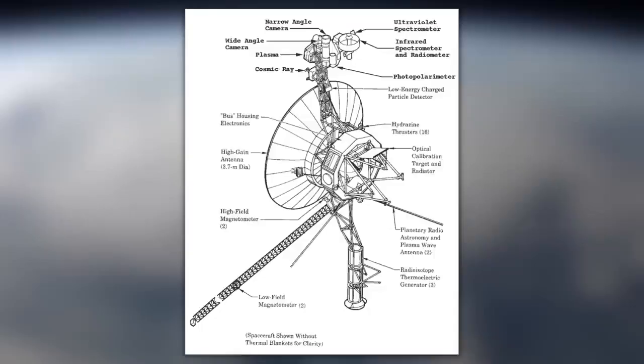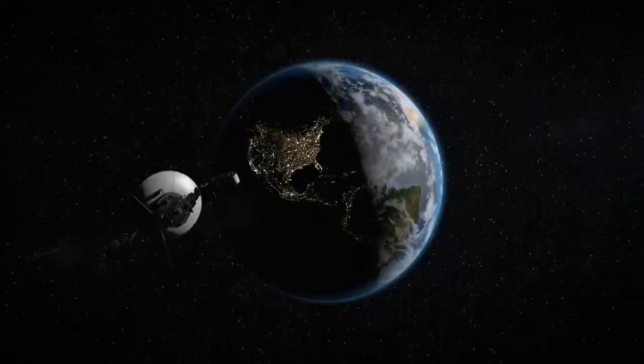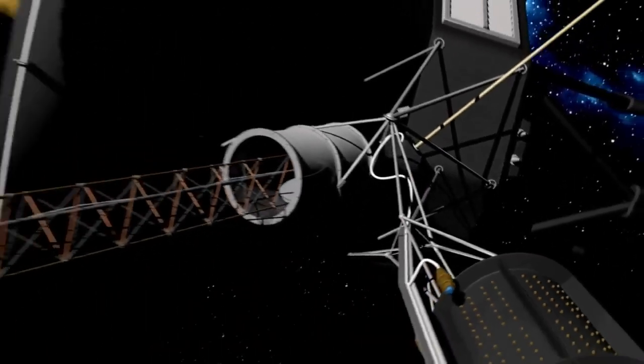The Attitude Articulation and Control System, AACS, of the probe is in charge of controlling the spacecraft's orientation, pointing its high-gain antenna towards Earth, and controlling attitude maneuvers.